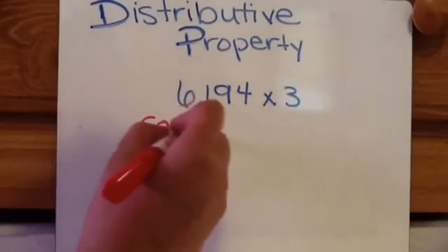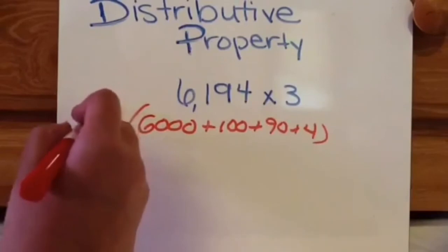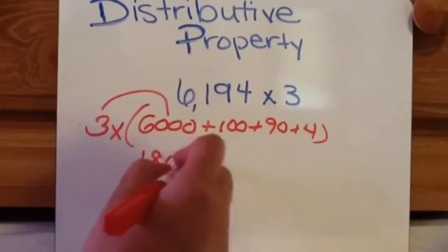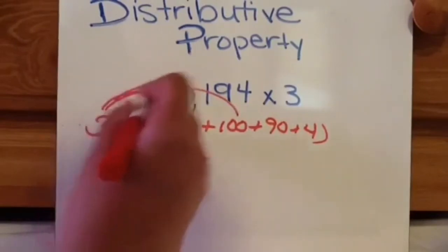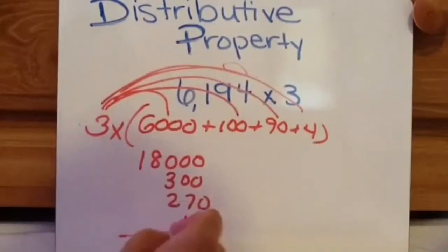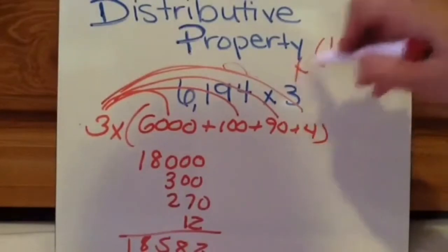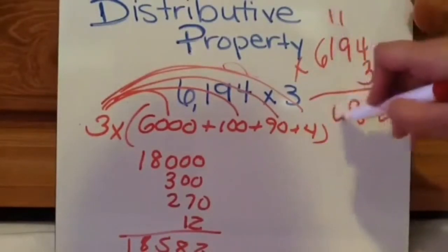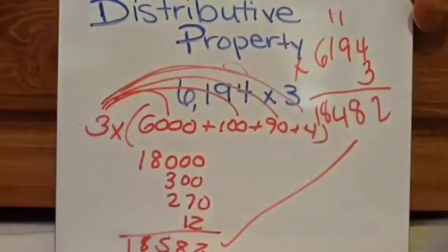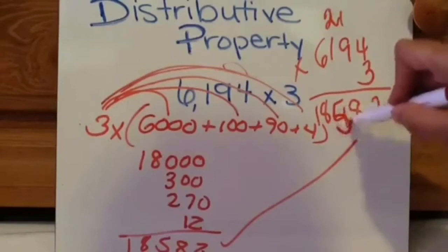Okay, so let's get started. So we have here 6,000 plus 100 plus 90 plus 4. And all of that's multiplied by 3. 3 times 6,000 is 18,000. 3 times 100 is 300. 3 times 90 is 270. 3 times 4 is 12. So I got 18,582. I'm going to check real quick. And my answers match up. Actually, no they don't. 9, 18, 27, 28. Sorry, that's a 2. Yes, now they match up.